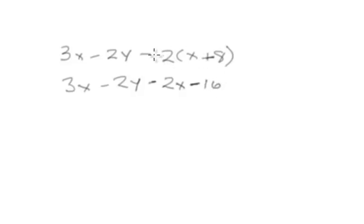If that were x minus 8 it would be negative 2 times negative 8 which would be a negative times a negative would be a positive, so it would be plus 16. Now to simplify we've got like terms here and there. So 3x minus 2x is going to be 1x minus 2y minus 16, or to simplify it more, 1x is the same thing as saying x minus 2y minus 16.